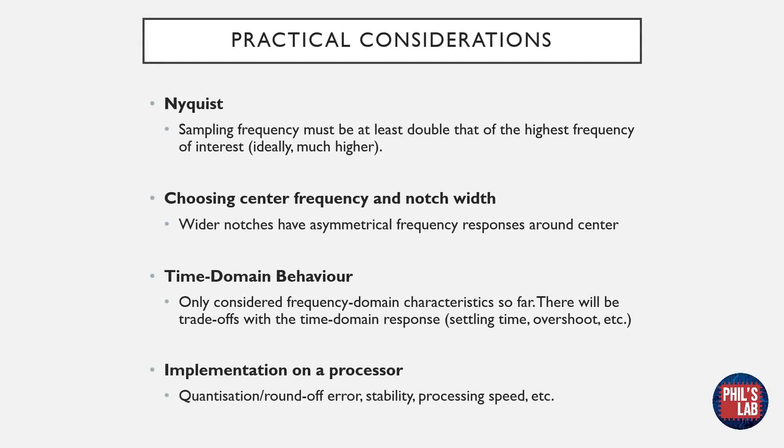As usual, before going straight to the implementation, we'll need to think of a few practical considerations. Firstly, in discrete time and when sampling signals, we're bandwidth limited by the Nyquist frequency. In effect, this means that our sampling frequency, which is 1 over our sampling time T, needs to be at least twice as high as the frequency of interest. Ideally, and in the real world, the sampling frequency should be much higher.